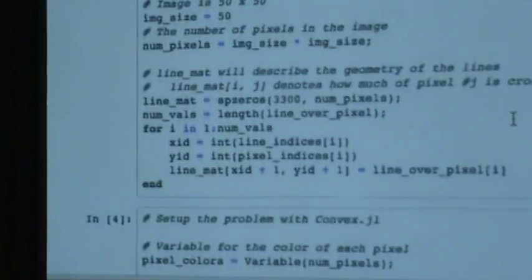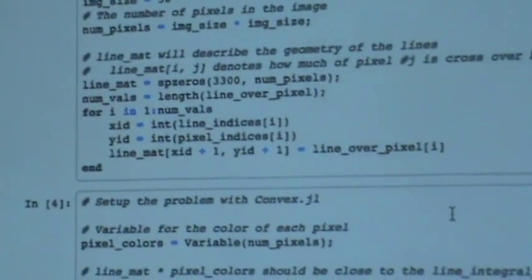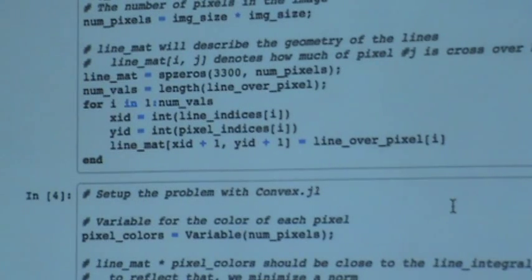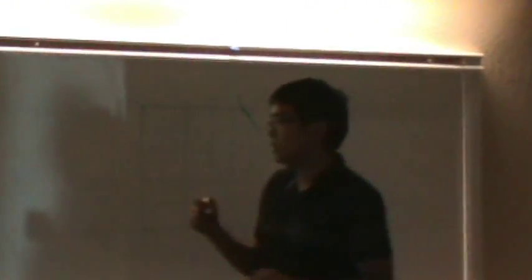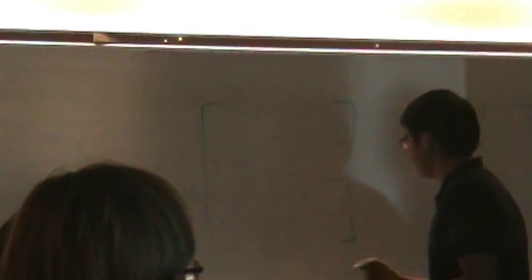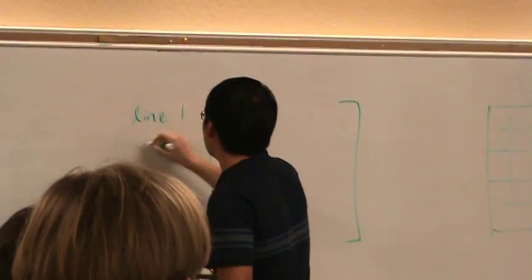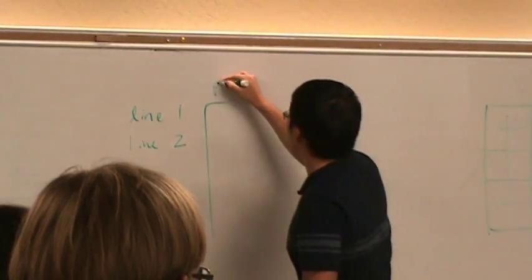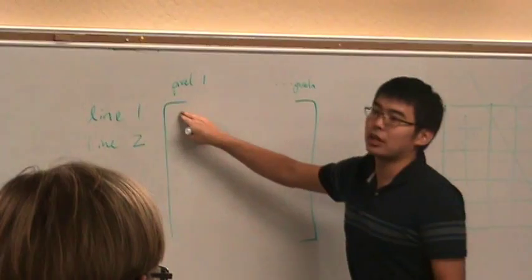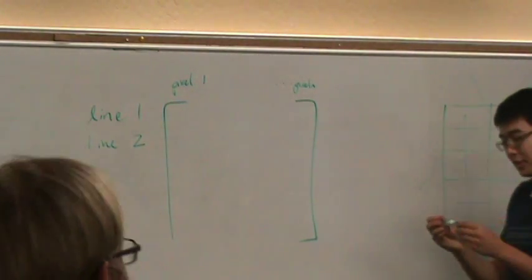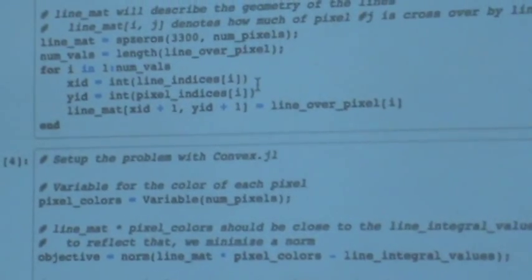From that, we're going to essentially construct a least squares problem to figure out what color we should make each pixel. So here we'll start showcasing the syntax of what's happening in Convex.jl. This whole chunk right here reconstructs the geometry of the image. It's going to build a big matrix where each row denotes a line and the columns denote the pixels. Essentially it's going to say for this line and this pixel how much they cross. So it's going to take the data and build it into this matrix. It's not too interesting, it's mostly just a bunch of vectors and matrix manipulations.